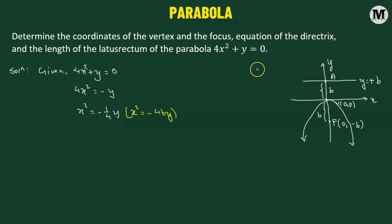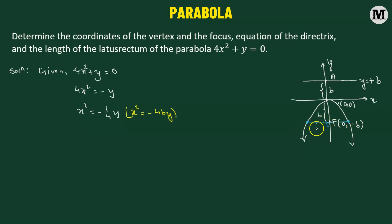Next we define the latus rectum. The latus rectum is the line which passes through the focus of the parabola, is perpendicular to the axis of the parabola, with its endpoints lying on the parabola. Its length is given by the absolute value of 4p.